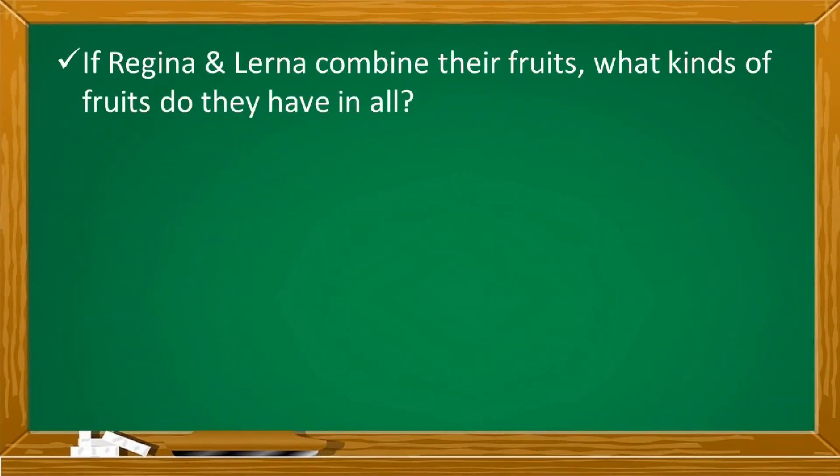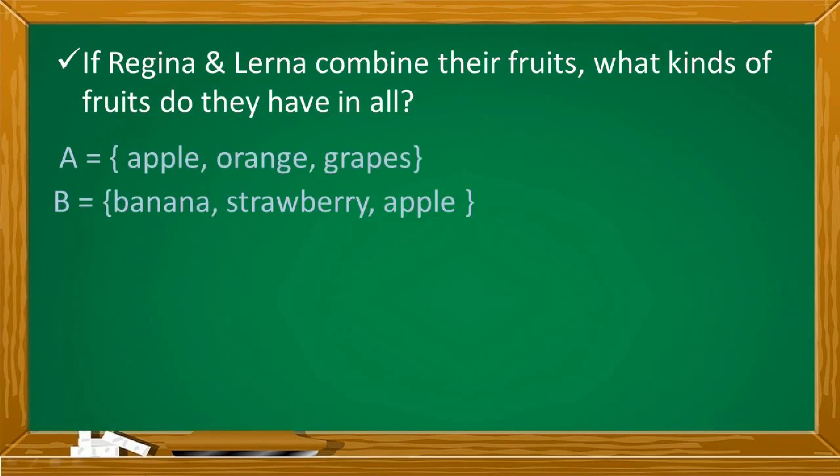Next question. If Regina and Lerna combine their fruits, what kinds of fruits do they have in all? By combining the fruits, we form a union of the fruits belonging to either Regina or Lerna or both. Pwedeng paborito lang ni Regina or paborito lang ni Lerna or pareho nilang paborito. Pagsasamahin na lahat.